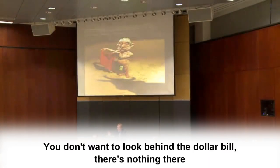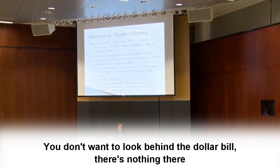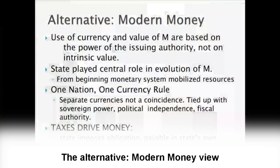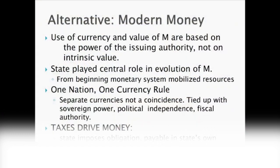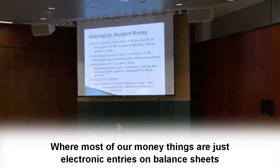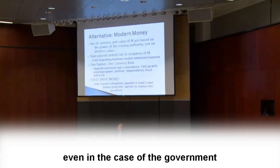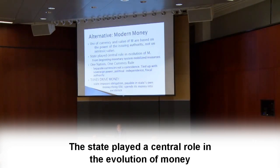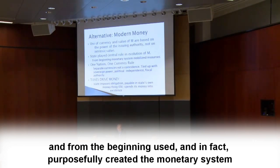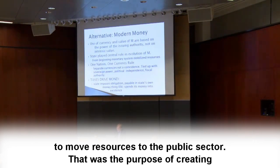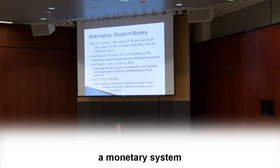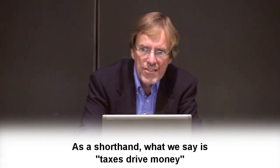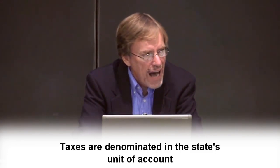Today almost nobody is confused about needing to back our money with gold. It sounds like there's nothing that backs up the currency — you don't want to look behind the dollar bill, there's nothing there. The alternative view — the modern money view — is that the use of currency and the value of money are based on the power of the issuing authority, not on intrinsic value. Most of our money things are just electronic entries on balance sheets. The state played the central role in the evolution of money and from the beginning purposely created the monetary system to move resources to the public sector.